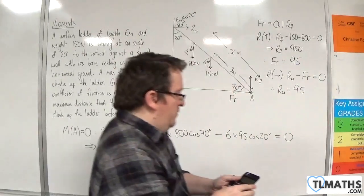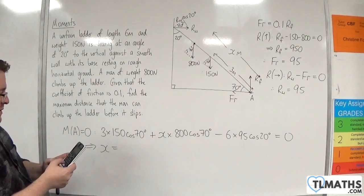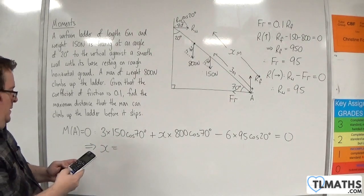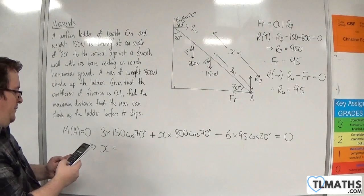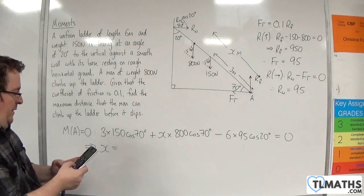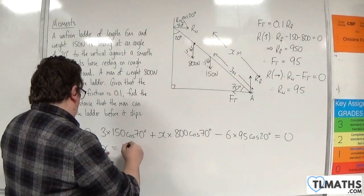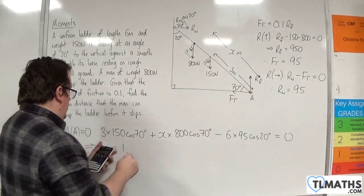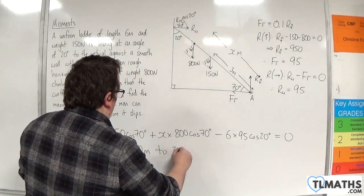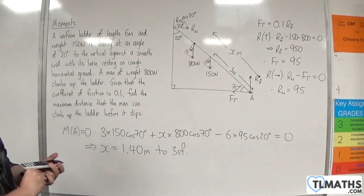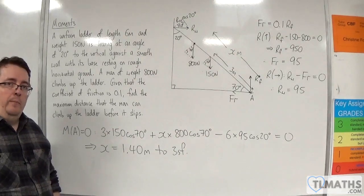Make sure your calculator is in degrees mode. We have 6 times 95 times cosine of 20, take away 3 lots of 150 times cosine of 70, and then I need to divide that by 800 times cosine of 70. And we get x is 1.395077661, so 1.40 meters to 3 significant figures. So, the man can climb up 1.4 meters before the ladder slips.